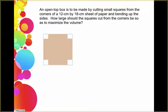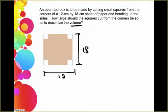So here is our problem. We have an open top box that's going to be made by cutting squares from the corner of a 12 by 18 centimeter sheet of paper, and then we're going to bend the edges up. We want to try to find out how large should the squares be so that we can maximize our volume. Here's an example of what our picture is going to look like, and we know that the original dimensions are 18 by 12.